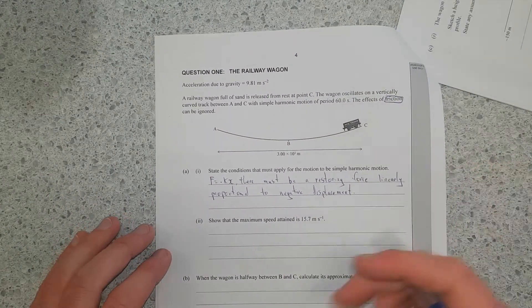Statement of conditions that must apply for the motion to be simple harmonic motion. So I'll pause it right now and discuss. Right, so I've written, this is essentially the definition: force equals negative KX. There must be a restoring force linearly proportional to the negative displacement. So that is the definition.